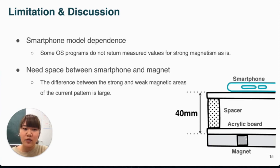Also, too strong magnetic fields can prevent the smartphone from working properly, so we created a space about 40mm between the magnet and the sensing surface.